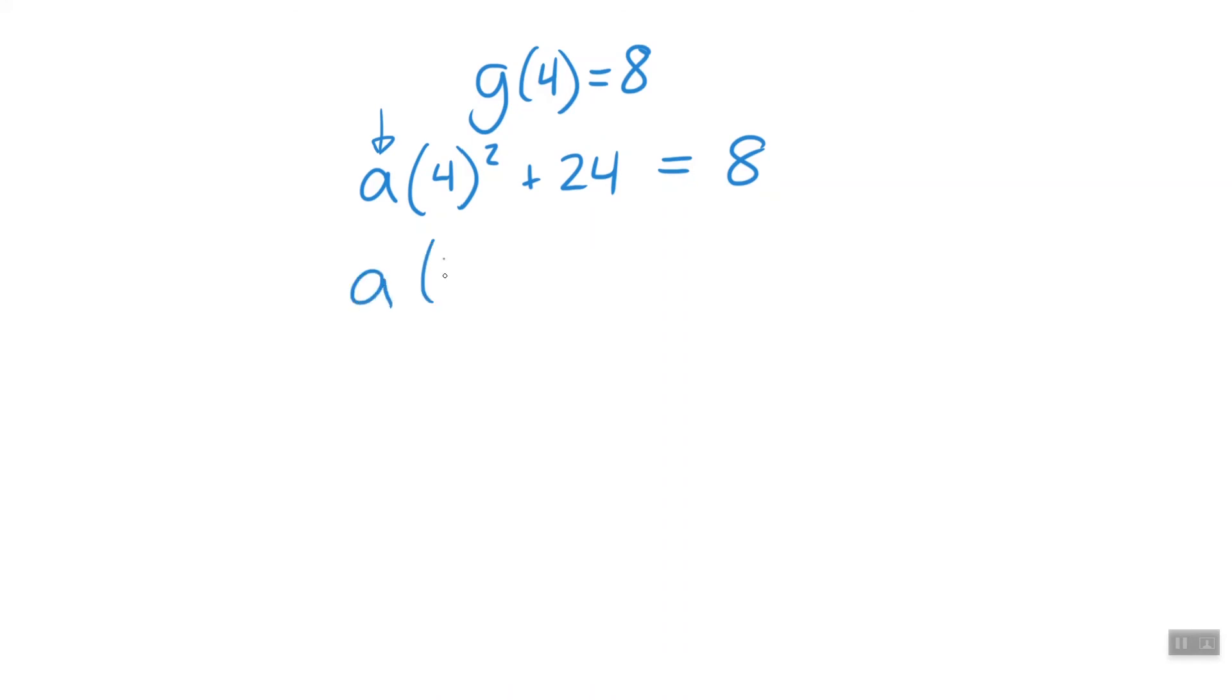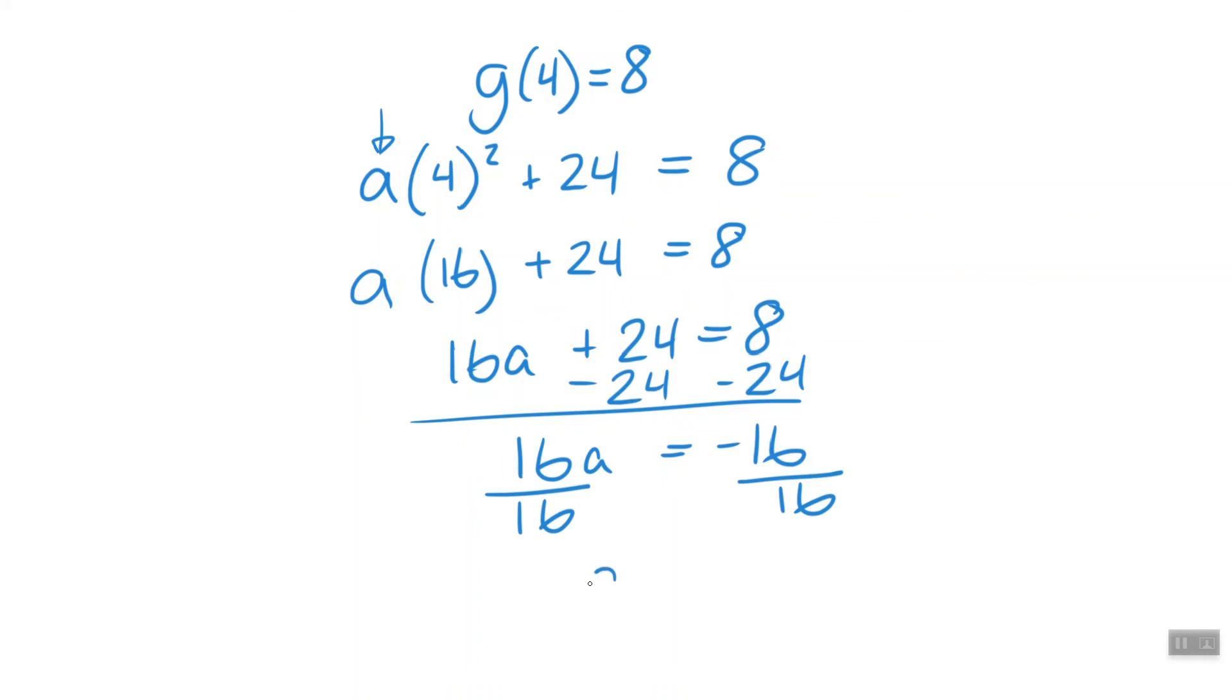That's going to give us 16. So now we have a times 16 plus 24 equals 8. 16 times a can't do anything. So let's go ahead and subtract the 24 from both sides. That's going to leave us with negative 16 equals 16a. Let's divide by 16 and a equals negative 1.